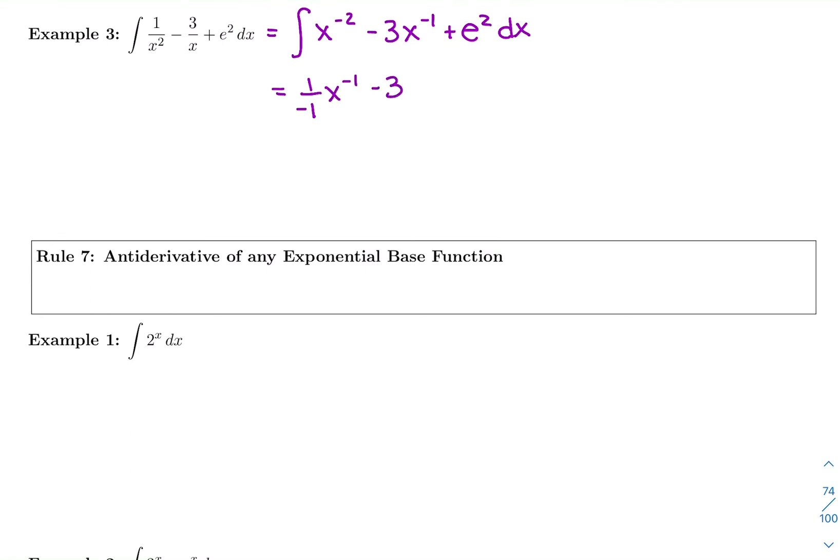Next one, I'd keep the minus 3. Add 1 to the power. Negative 1 plus 1 is 0. We can't do 3 divided by 0 or negative 3 divided by 0. So we're going to write minus 3 ln of x plus e squared. It does not have an x with it. That is just a weird-looking constant. You could plug it in on your calculator to see what the number is. Antiderivative of any constant is that constant times x plus c.